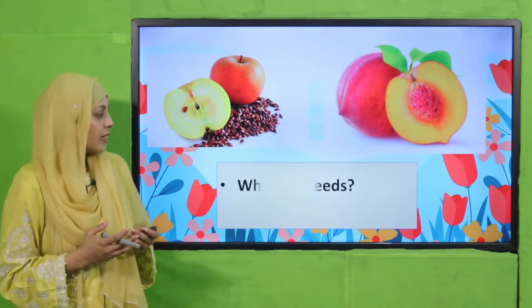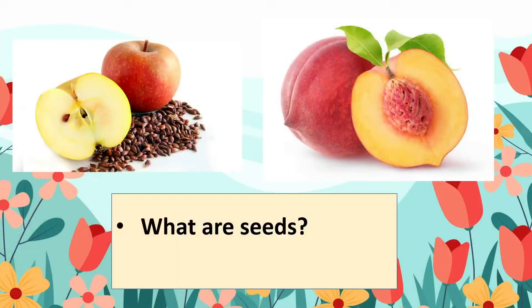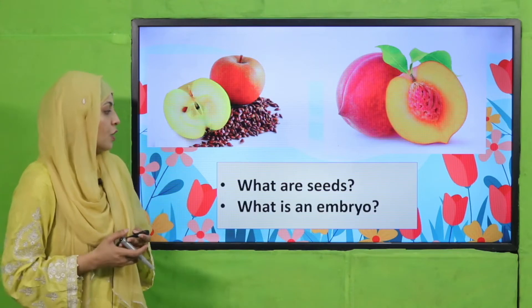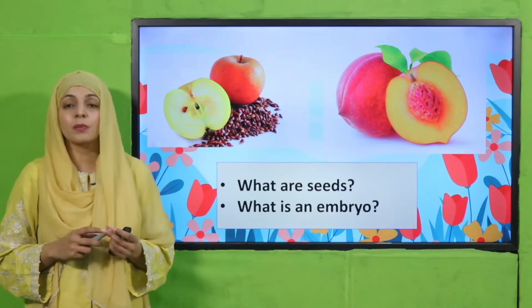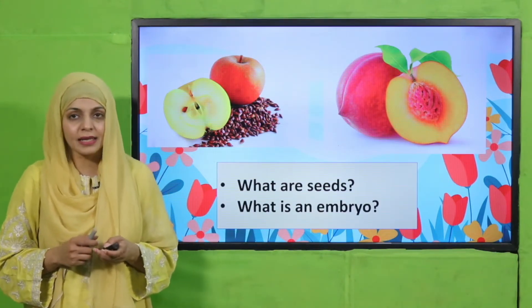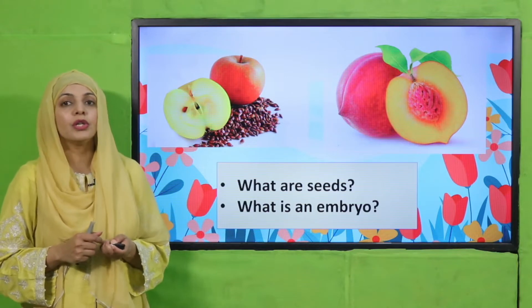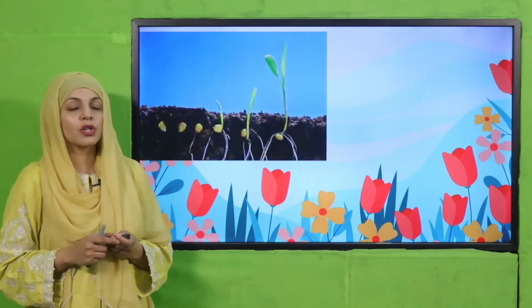Quickly look at these pictures and then tell me: what are seeds? Seeds are the hard part of the fruit which grow into a new plant. So what is an embryo? An embryo is a small plant which is present inside the seed and which grows into a new plant.